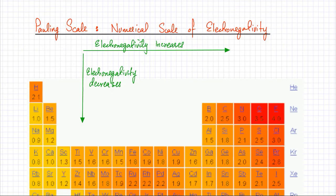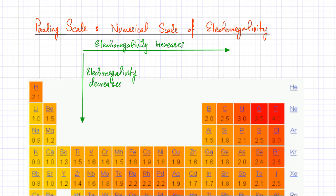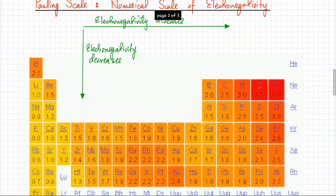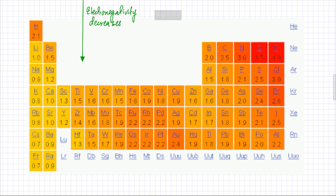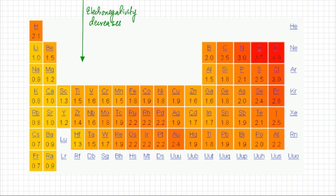There is a Pauling scale that gives a numerical measure of electronegativities — a technical way to measure the tendency for an atom to gain electrons. Electronegativities increase to the right of the periodic table: as you move across the period, electronegativity increases. But if you move down any group, electronegativity decreases because bigger atoms have a lower tendency to attract electrons. The elements shown in dark red on the Pauling scale periodic table are the most electronegative — those on the extreme right and top. As you move down the group, electronegativity decreases.